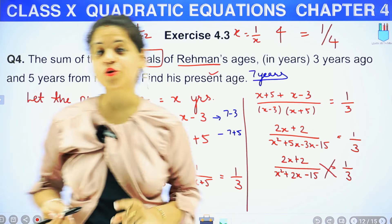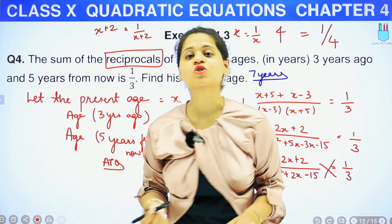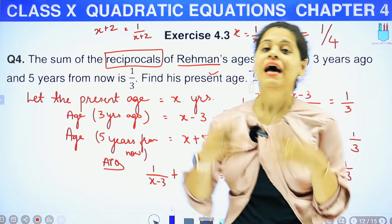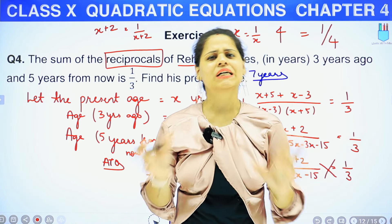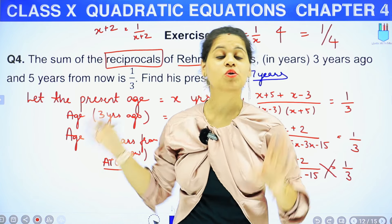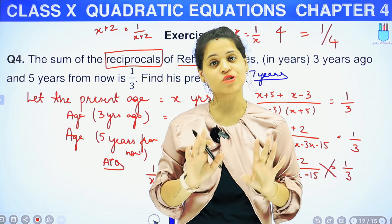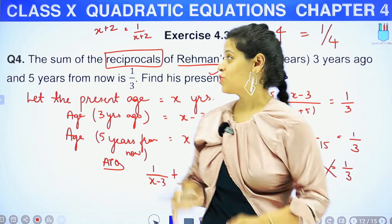So this was the fourth question of exercise 4.3. I hope the question is clear. Simple था question — थोड़ी सी calculation वगेरा है, लेकिन अच्छे से समझोगे तो easy लगेगा. इस टाइप के age वाले questions exam में बहुत ज़्यादा आते हैं.